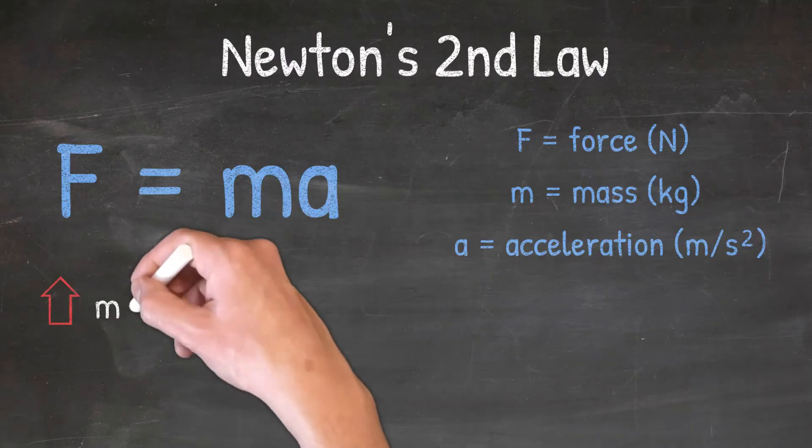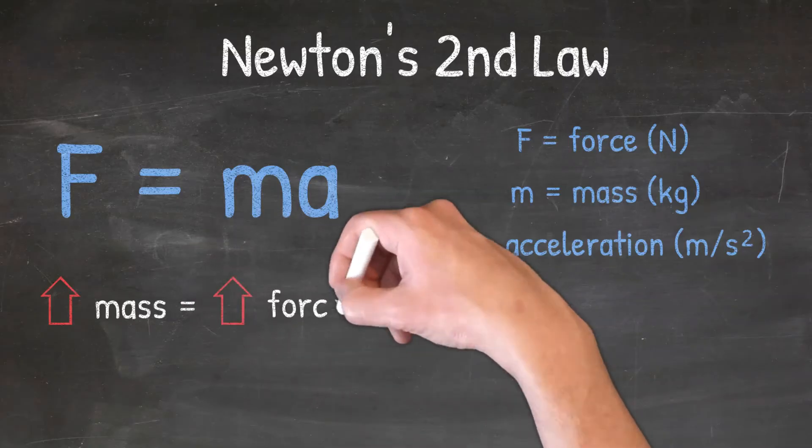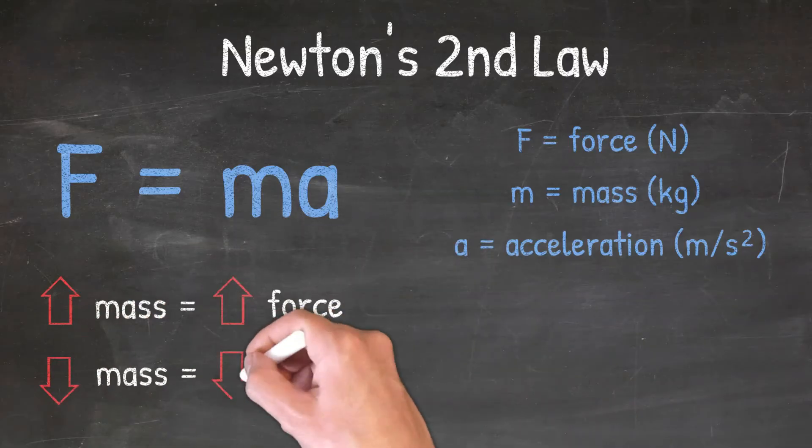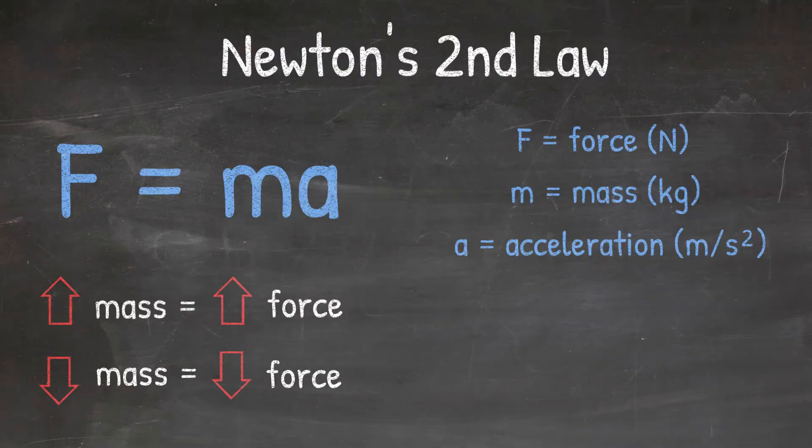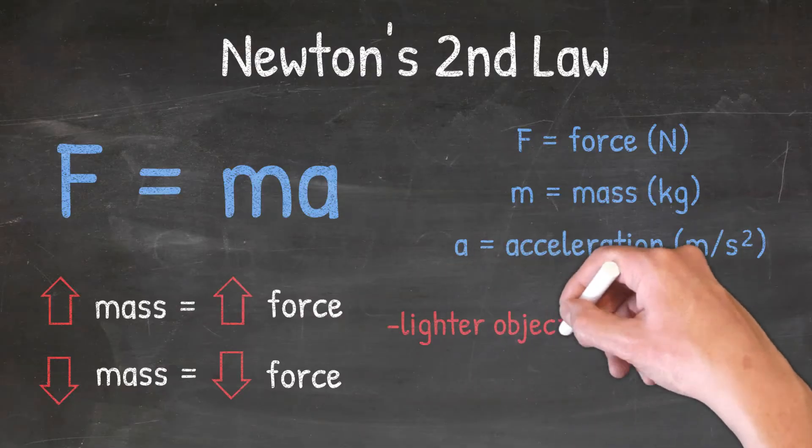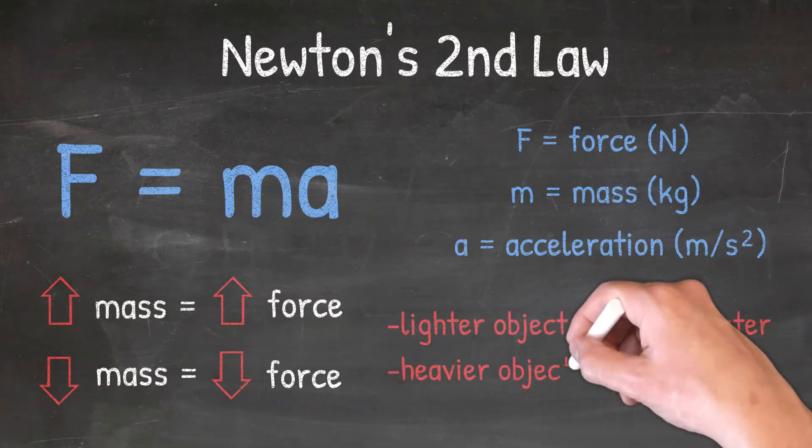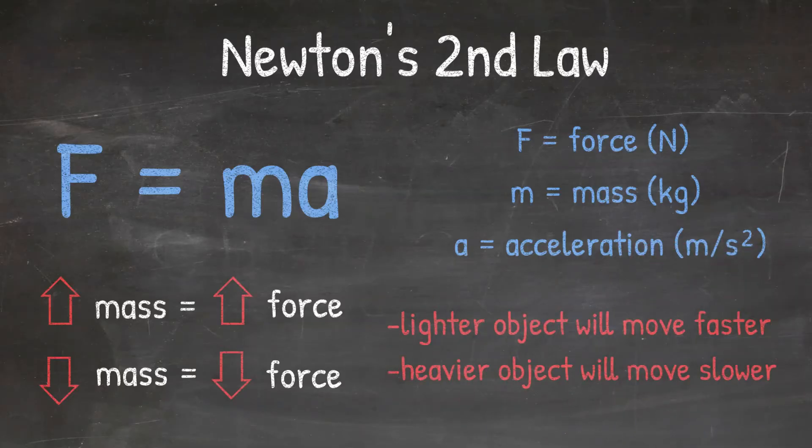The larger the mass of the object, the more force it will take to accelerate it. The smaller the mass, the less force it will take to accelerate it. And finally, if you apply the same force to two different objects, the lighter object will move faster, and the heavier object will move slower due to their different masses.